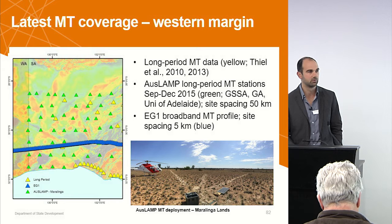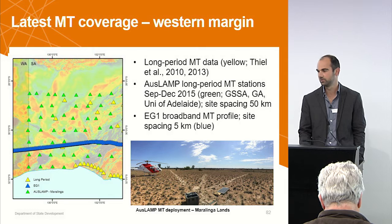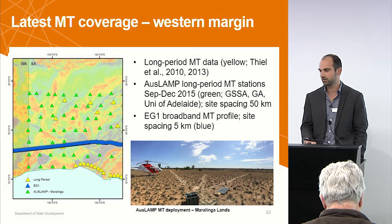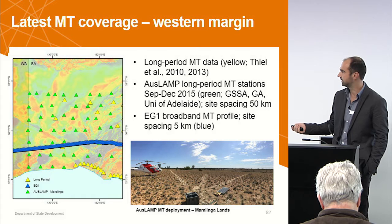All the green, yellow, and blue sites are completely new. The green ones are the Auslamp MT data that we've just collected towards the end of last year and just finished processing. We're just starting modeling now, so I can't really show any results yet — but stay tuned in the next few months. That's a co-funded project between GA, GSSA, and also the University of Adelaide.